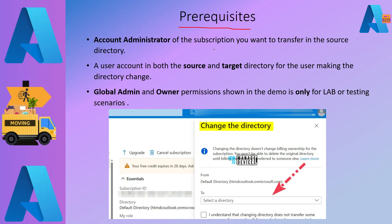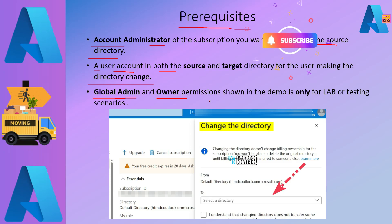Let's quickly check the prerequisites. You need the appropriate permissions. One permission documented in the Microsoft Learn pages is account administrator for the subscription you want to transfer in the source directory. You also need a user account in both the source and target directory to make the directory change. For the following demo, I have used global admin and owner permissions — that is only for lab or testing scenarios. In production, you must follow the least privilege approach. More details are available in the Microsoft documentation.